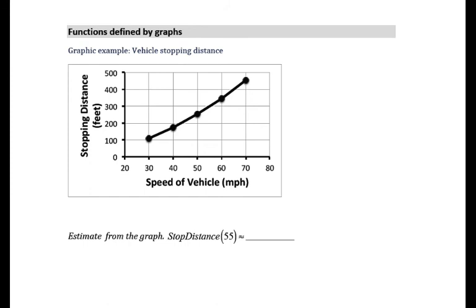If our function is defined by a graph, like we see here, this is the same five ordered pairs that we were just looking at in a table, but they are graphed and connected, we can still follow the idea that stop distance is the function name, 55 is the input x, and what we are interested in finding is the y value, or the output.